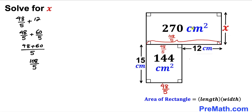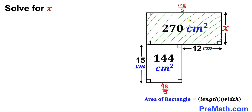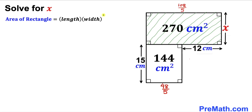Since we are dealing with a rectangle, if this side length is 108/5 then the opposite side is also 108/5 centimeters. Now let's focus on the bigger rectangle whose area is 270 centimeters square and whose side lengths are 108/5 and x. Using the area formula: 270 equals (108/5) times x.